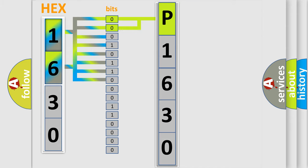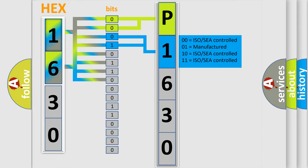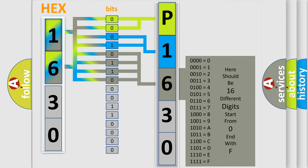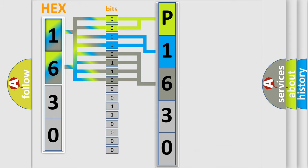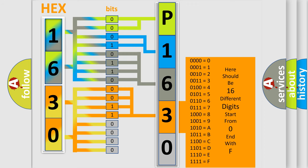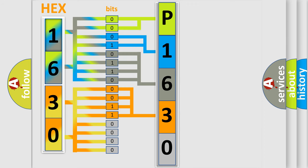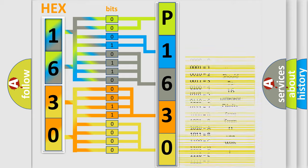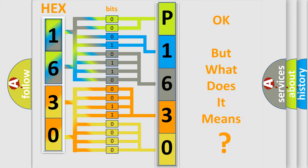The next two bits determine the second character. The last bits of the first byte define the third character of the code. The second byte is composed of a combination of eight bits. The first four bits determine the fourth character, and the combination of the last four bits defines the fifth character. A single byte conceals 256 possible combinations. We now know in what way the diagnostic tool translates the received information into a more comprehensible format.